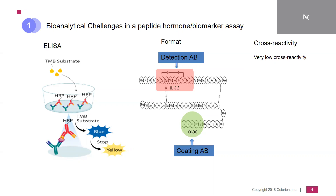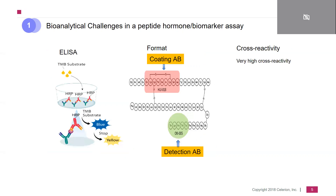This assay performed very, very well and had very low cross-reactivity towards all the other insulin analogues. Then what happened is we had to use another kit lot, and things changed. The ELISA format was obviously the same, but the only change was the swap of the detection with the coating antibody — and the provider had not informed us about that. All of a sudden, this assay showed a huge cross-reactivity and was no longer suitable for reliable detection of insulin.